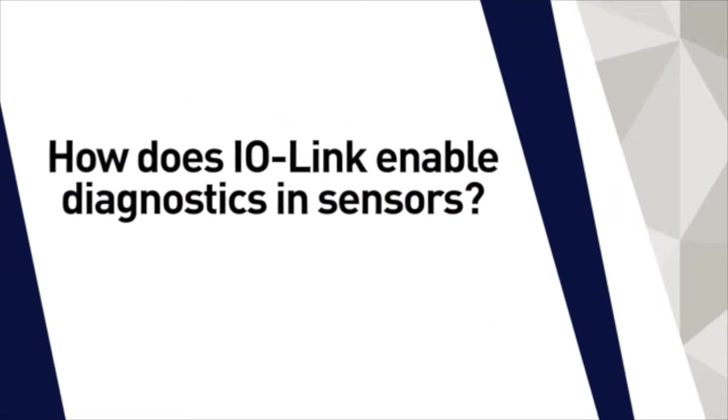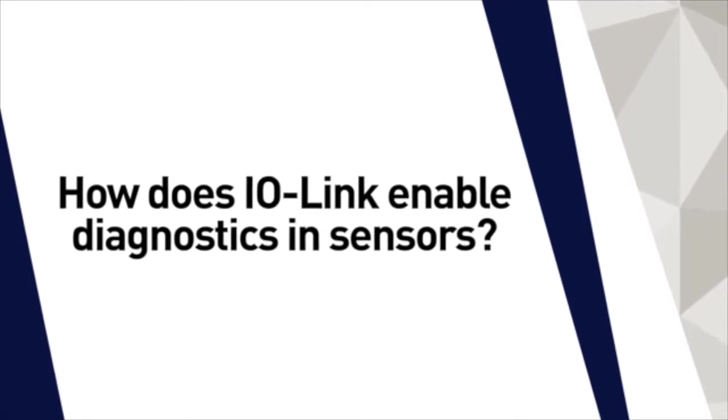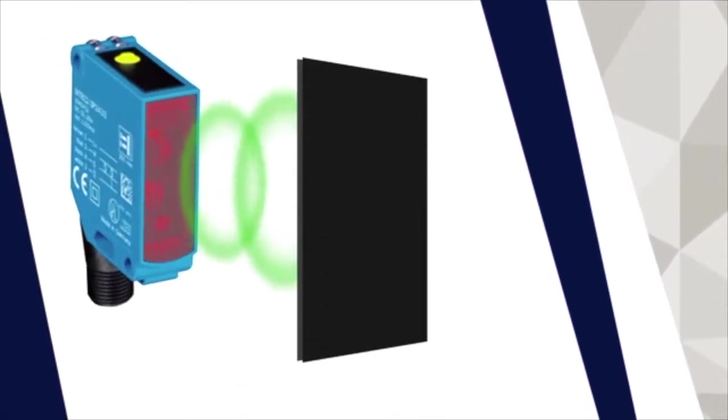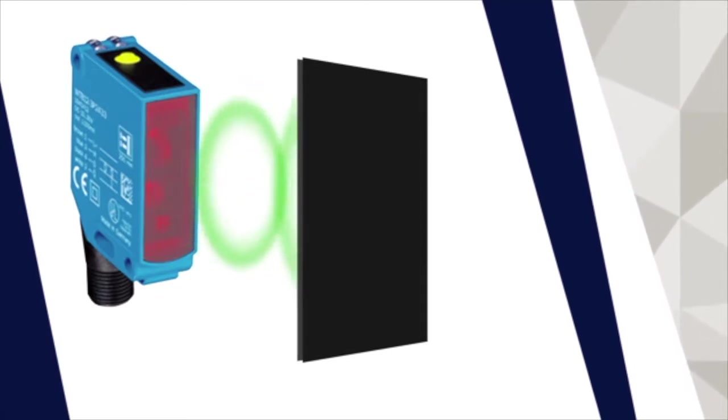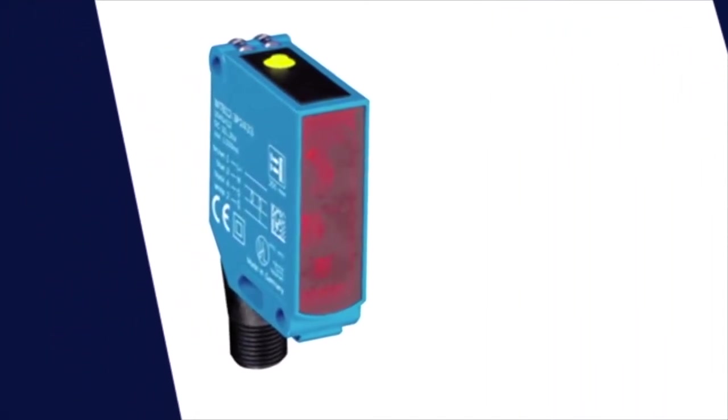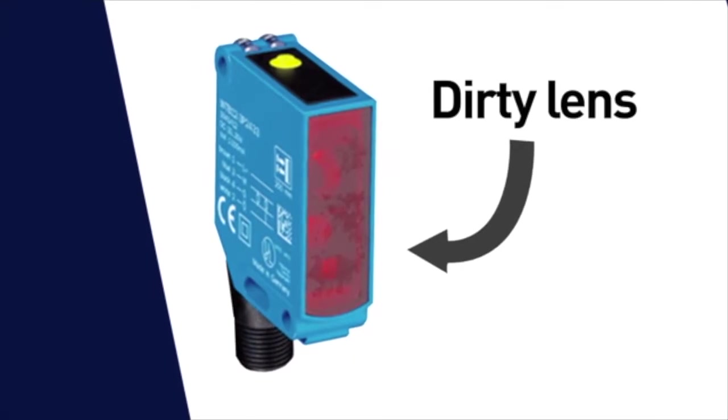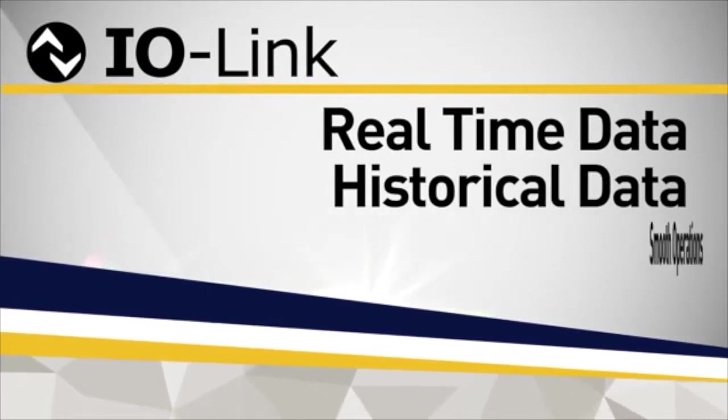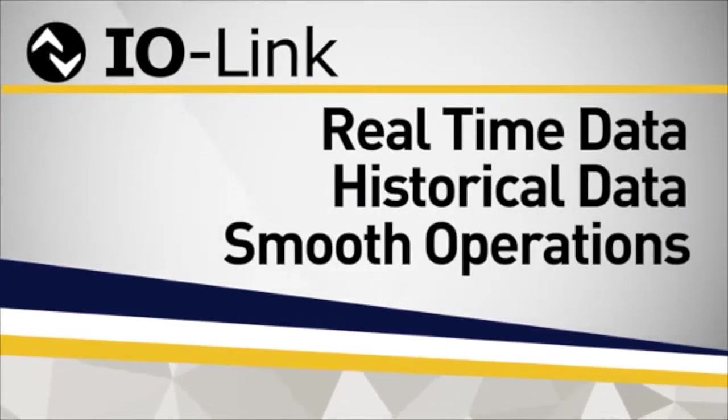An example of how IO-Link enables diagnostics in sensors. Previously, it was not possible to tell if a sensor lens is dirty until the sensor fails to sense the target. With IO-Link, excess gain information can be used to check for dirty lenses. Since IO-Link can provide real-time and historical data over the IO-Link network, this ensures smooth operations.